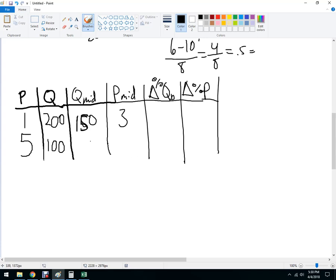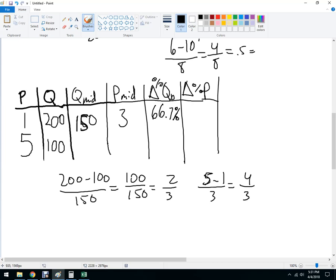So 200 minus 100 over 150, and I've got 100 over 150, which is the same as 2 thirds, so this is 66.7%. And then the price change is 5 minus 1 over 3, so we've got 4 over 3, which is 1 and 1 third, so it's like 133.3% or so.